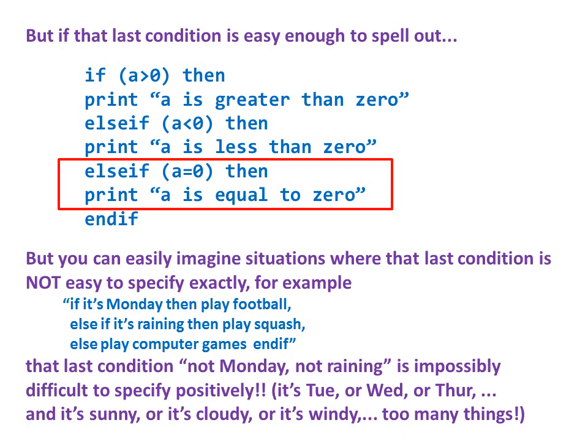But you can easily imagine situations where that last condition is not easy to specify exactly. For example, if it's Monday, then play football. ELSE if it's raining, then play squash. ELSE play computer games. END IF. Now that last condition, that last ELSE corresponds to not Monday and not raining. Now that's impossibly difficult to specify positively. I mean, it means it's Tuesday or Wednesday or Thursday or, and it's sunny or it's cloudy or it's windy. There's just too many things to spell out. So it's much better just to say ELSE in all other circumstances.